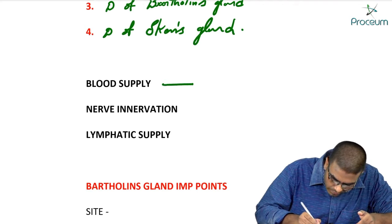If it is a Bartholin's abscess that is recurring with repeated infections, the treatment of choice is marsupialization. Marsupialization involves giving an incision, everting the edges outside, and suturing them so the cyst is not closed again.